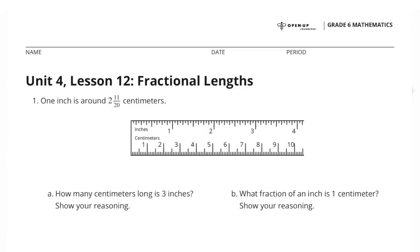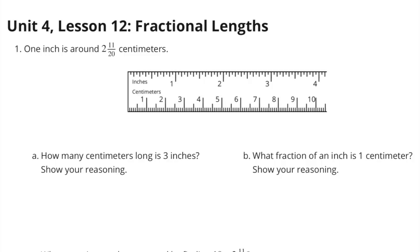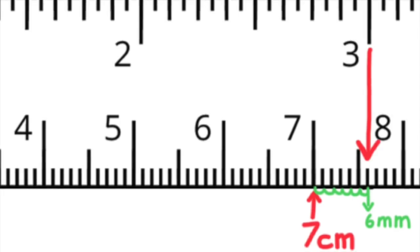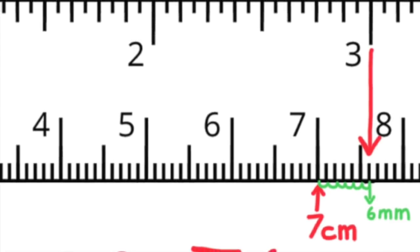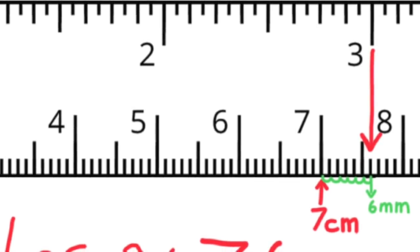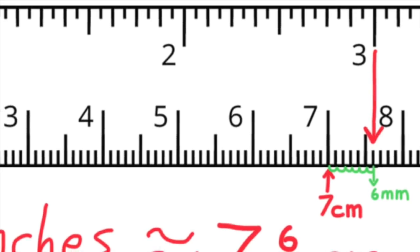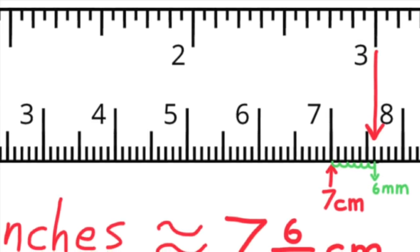Unit 4, Lesson 12: Fractional Lengths. Number one: one inch is around two and eleven-twentieths centimeters. Part a: how many centimeters long is three inches? Show your reasoning. Three inches is just about seven centimeters and six millimeters.